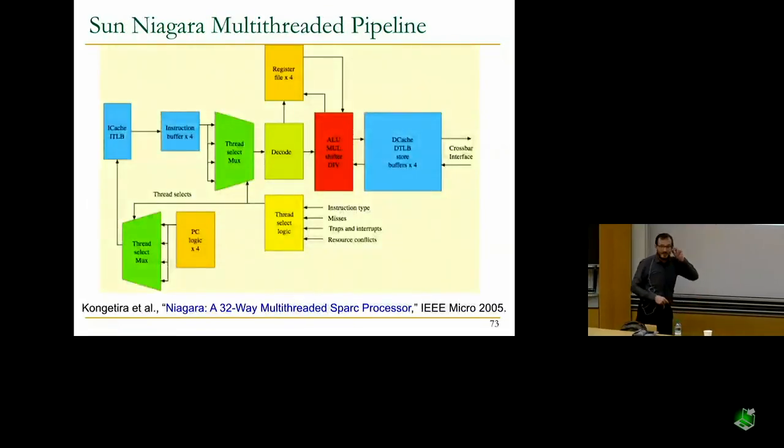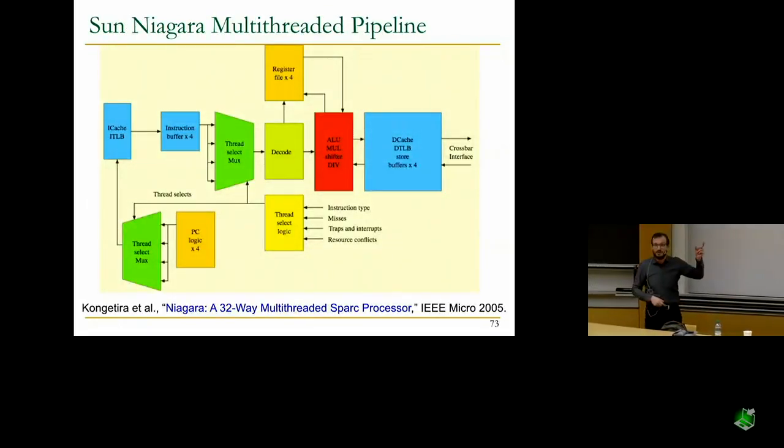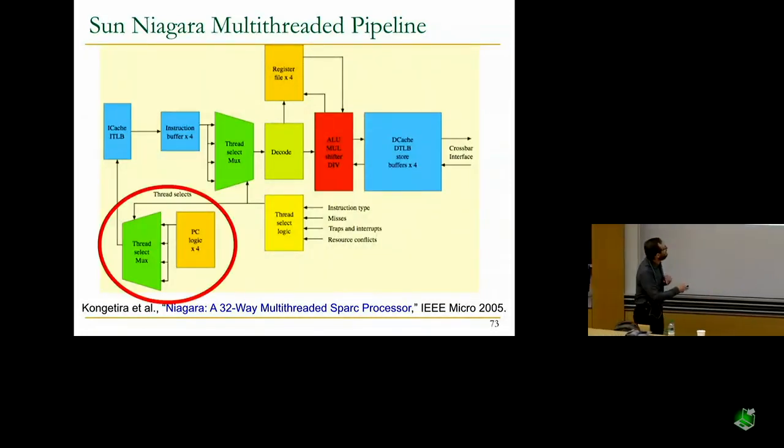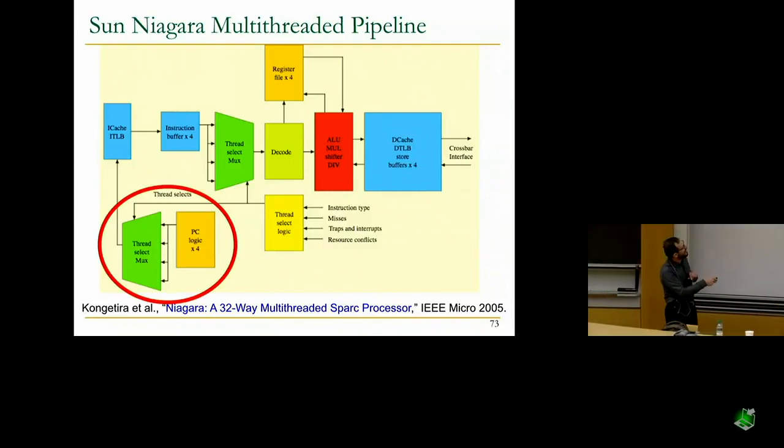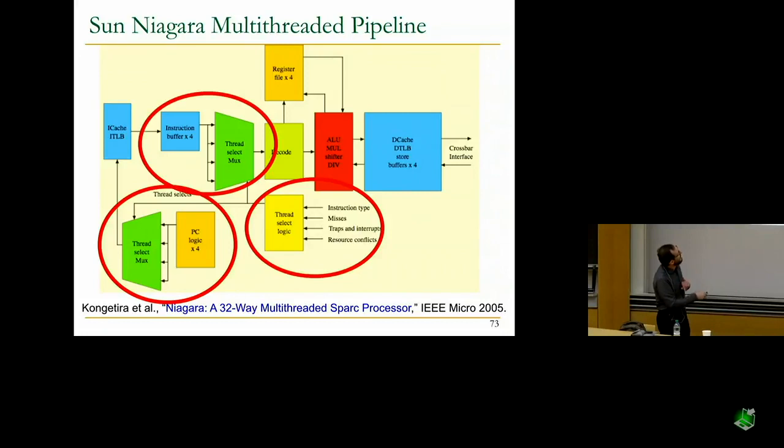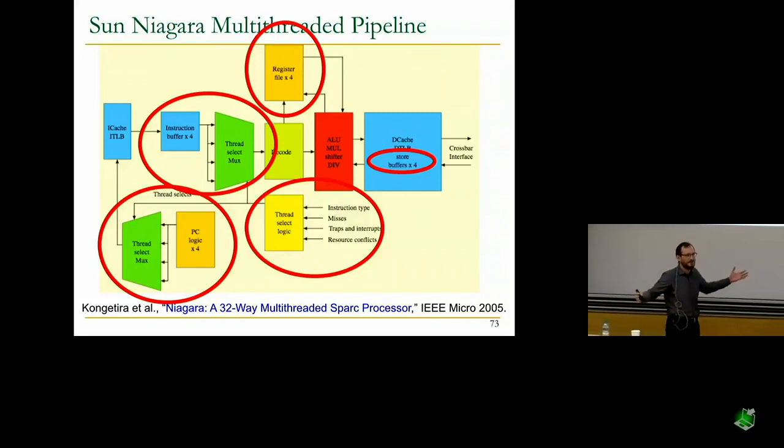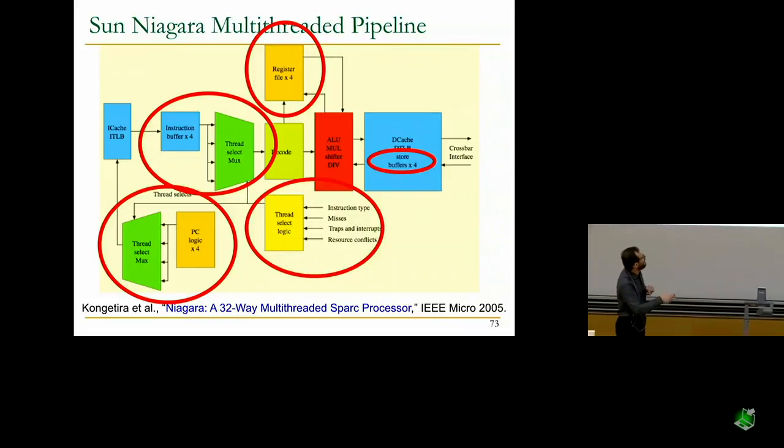Sun Niagara had similar principles. This was one of the first multi-core machines. The idea was actually very simple. Keep the pipeline simple. No data dependency check logic. If you look here, it could fetch from four different threads. There's a thread select MUX, four different buffers for instructions. Their thread select logic selects a thread depending on different things. There's another thread select MUX from the instruction buffers. Register file times four, as you can see, to distinguish between different threads. And store buffers times four also. You need to multiply these per-thread data structures by four in the machine.